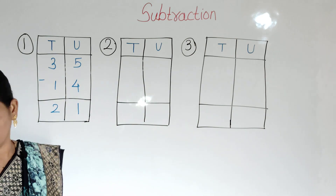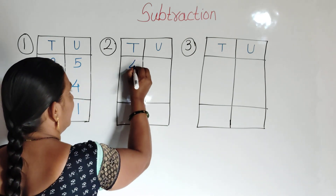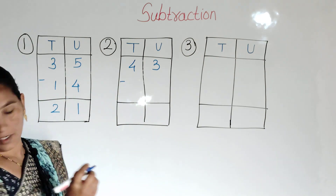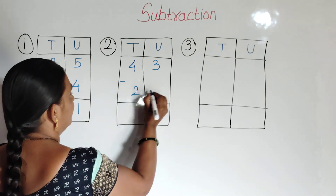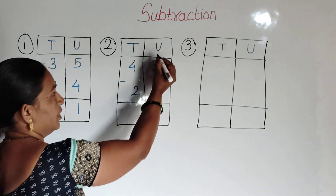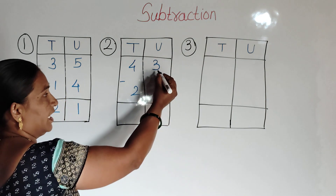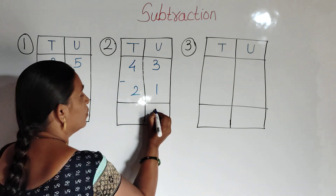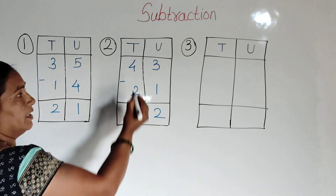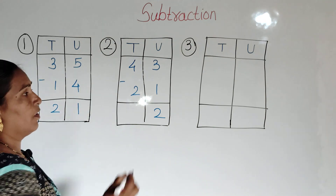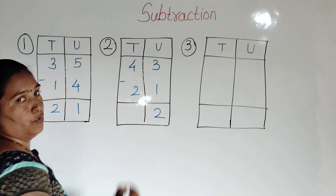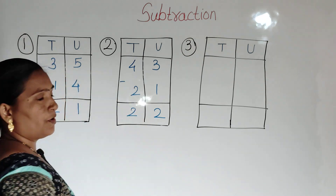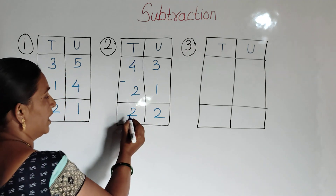Second example: 43 minus 21. First, units place: 3 minus 1 is equal to 2. Then tens place: 4 minus 2 is equal to 2. So the answer is 22.